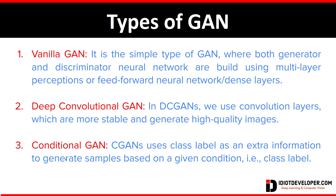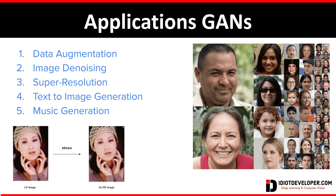Now for a few applications. The first application is data augmentation — one of my favorite applications. Sometimes when working with deep neural networks you are short of data, and in that case you can use GAN to generate more synthetic data. That synthetic data can be used while training your neural network, or for semi-supervised or self-supervised learning. The second application is image denoising.